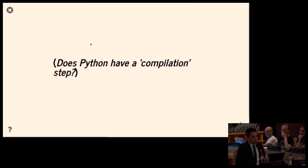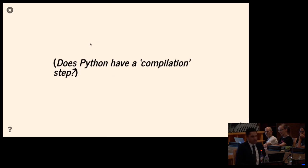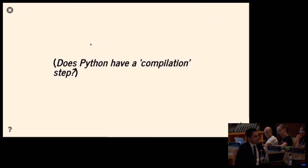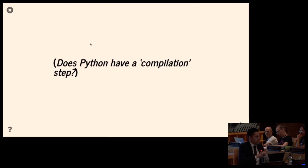Python does have a compilation step — it's the step which takes all the source text and generates bytecode. But that catches almost no errors, unlike in C, C++, or Java. The one interesting thing it does in that process is figure out where variables came from: was this a local variable, a global variable, did it come from a closure? And it emits special bytecodes in those cases. We'll see this become relevant in just a few minutes.